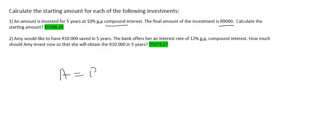We can use the compound interest formula, where the final amount, A, has been given to us as 9,000 Rand. But they haven't given us the starting amount, so we'll just leave it as P. The interest rate is 10%, which is 0.1, and the number of years is 5.